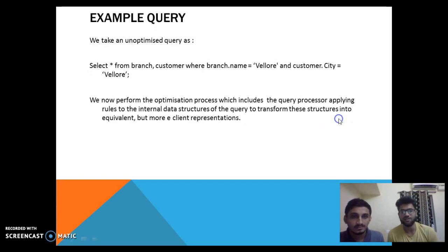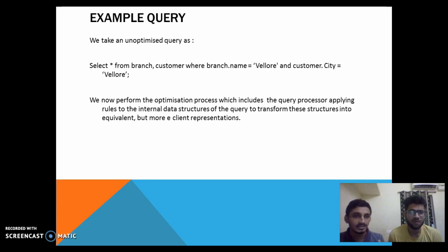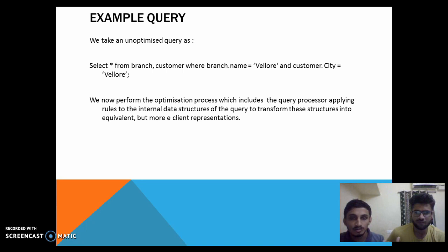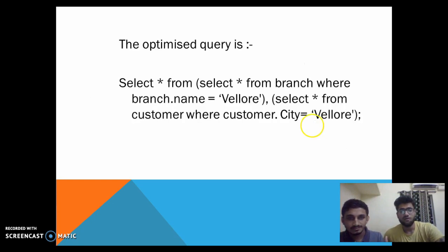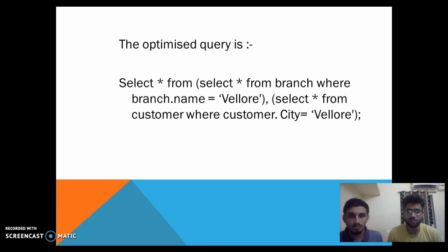Now we're going to demonstrate our simple query. This is one of the basic examples — this is our optimized query. Here we are trying to find all the records from the tables branch and customer where branch.name equals 'Valor' and customer.city equals 'Valor'. We then perform the optimization process and the optimized query is shown as: SELECT * FROM (SELECT * FROM branch WHERE branch.name = 'Valor'). This actually reduces the number of attributes and tuples to be searched, and hence is a more optimized query.